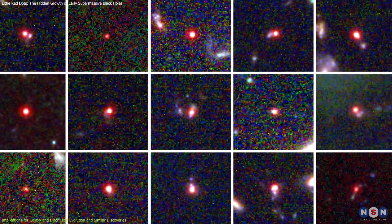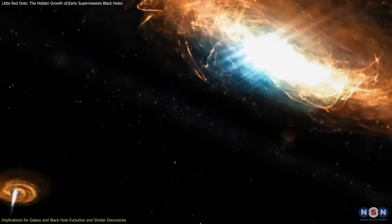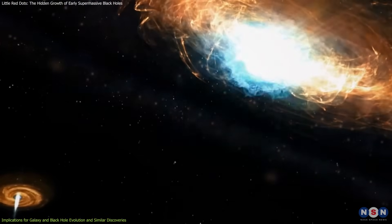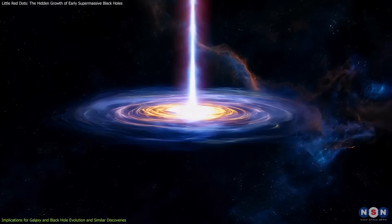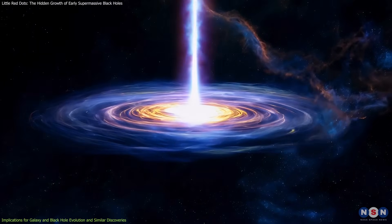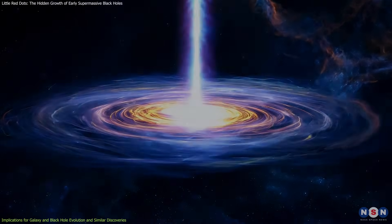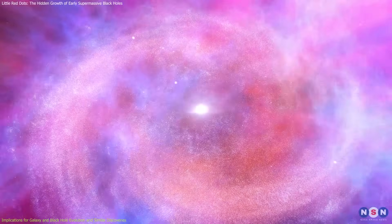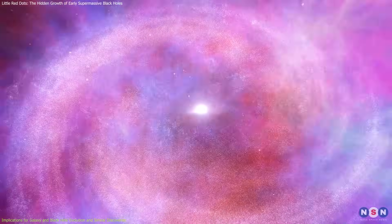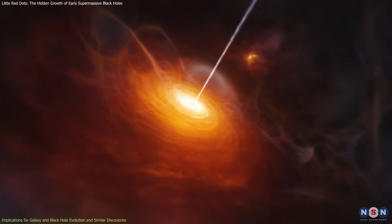What makes LRDs unique, however, is that they appear to bridge the gap between the earliest black hole seeds and the more mature AGNs observed in later cosmic times. Their presence suggests that many early galaxies underwent a hidden growth phase, where black holes accumulated mass while being cocooned inside dense ionized gas. Over time, as these galaxies evolved, the surrounding gas would have been cleared, revealing the more familiar bright quasars and AGNs that we see today.